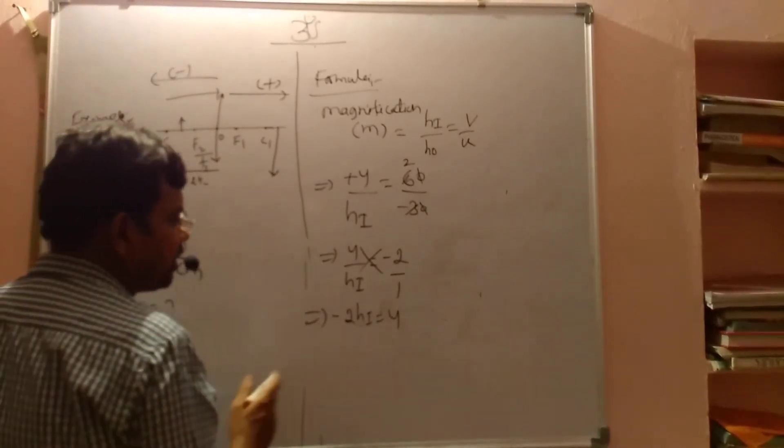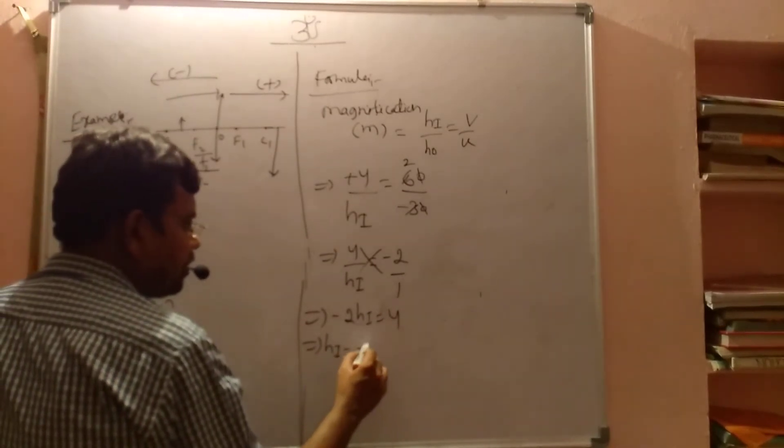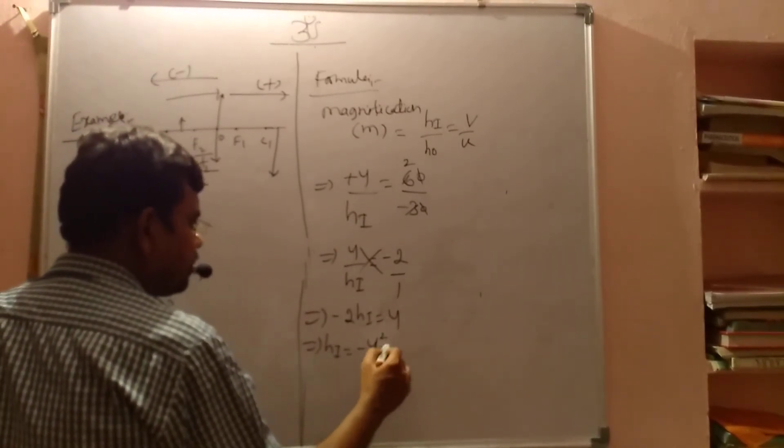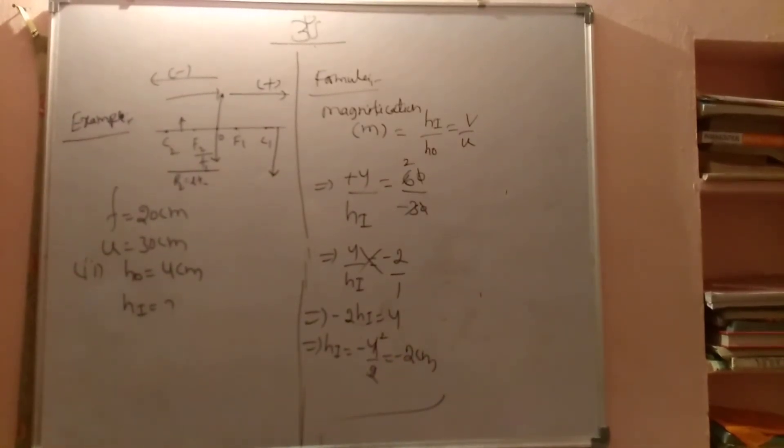Now what is the height of the image? This height of the image equals minus 4 by 2, 2 cancels 2, so minus 2 centimeters. So this is the process for finding height of the image.